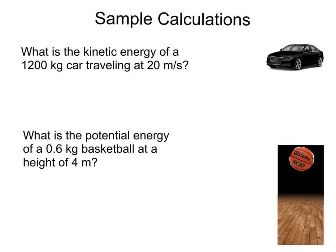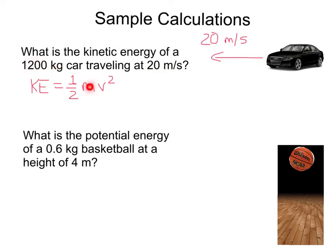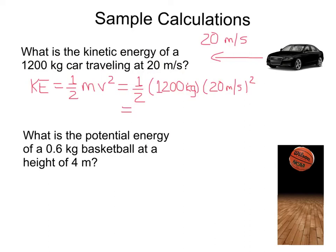Let's do some sample calculations. What is the kinetic energy of a 1200 kilogram car traveling at 20 meters per second? Here we can see this car traveling at 20 meters per second. Its kinetic energy is given by one half times its mass times the velocity squared. Substituting in 1200 kilograms and 20 meters per second gives 240,000 joules of kinetic energy.